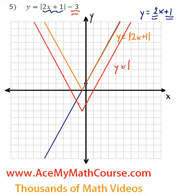And that is y equals absolute value of 2x plus 1 minus 3. That's it.